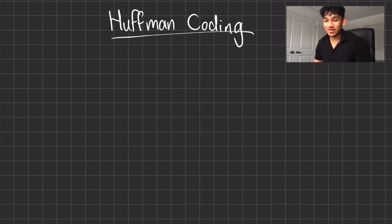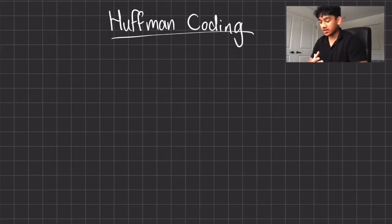Hey everyone, hope you guys are having a great day. My name is Bonneth and today I'm gonna be talking about Huffman coding. So Huffman coding is a compression algorithm that's used for many different things. A compression algorithm is basically a way of making a file smaller.